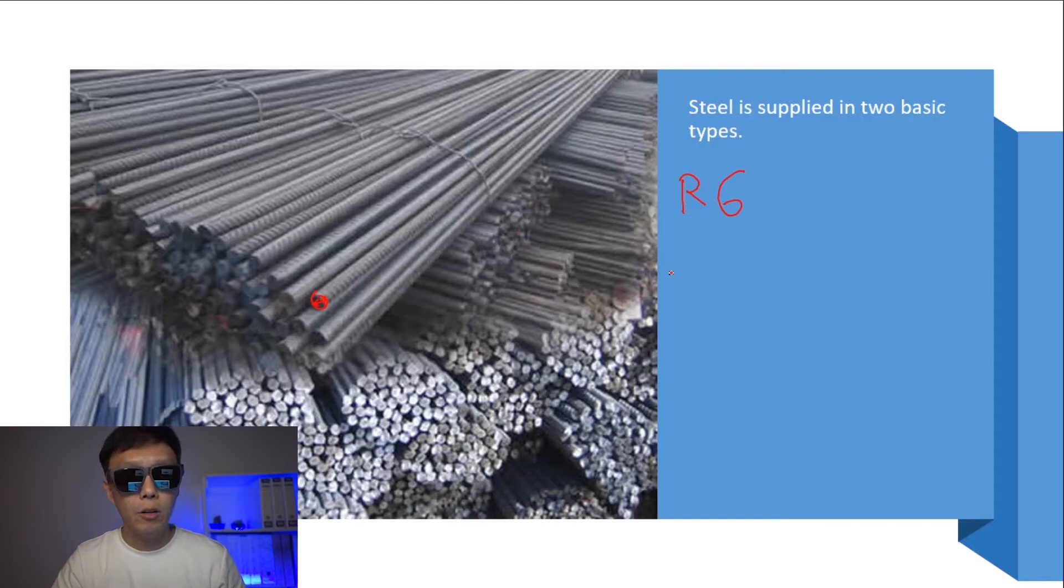And T is the code for high tensile steel bars. For example, when you see T10 in the drawing, it means high tensile bar 10mm diameter. The diameter of the bar is 10mm.